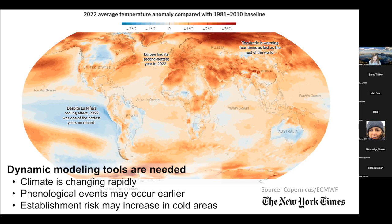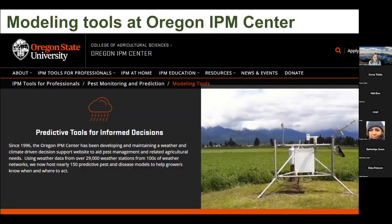Global warming is certainly real and happening. This map shows the 2022 average temperature anomaly compared with the 1981 to 2010 baseline. Across most of the globe we see up to three or more degrees Celsius increase in temperatures. For a pest, phenological events may occur earlier because it's developing through its life cycle faster. Establishment risk may also increase in areas previously too cold for survival — higher latitudes and higher elevations.